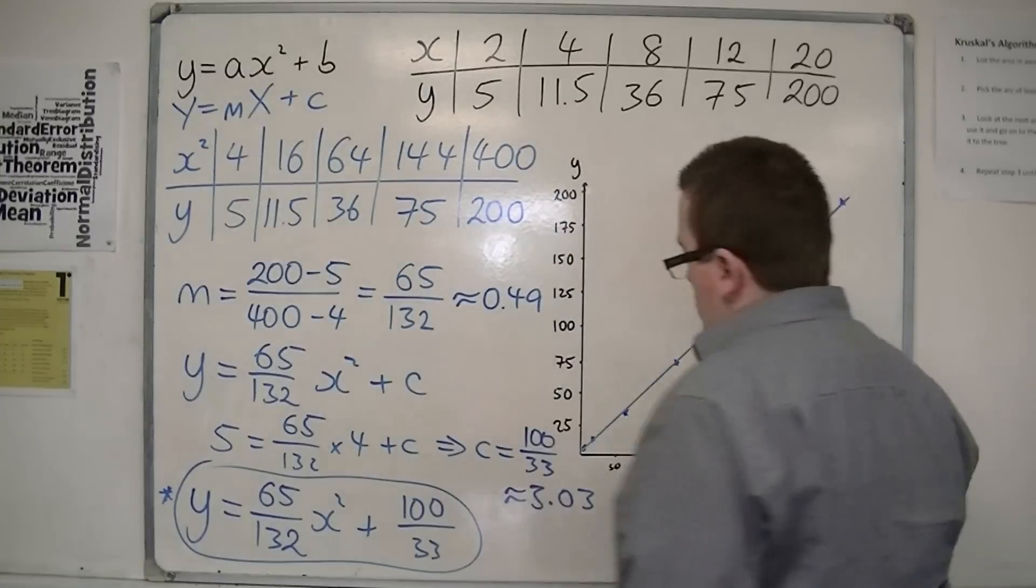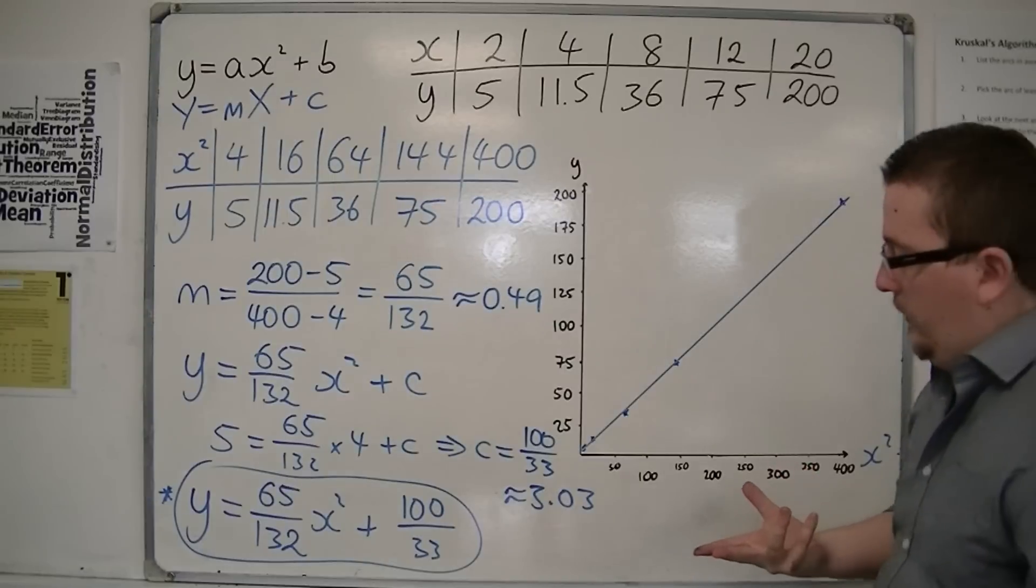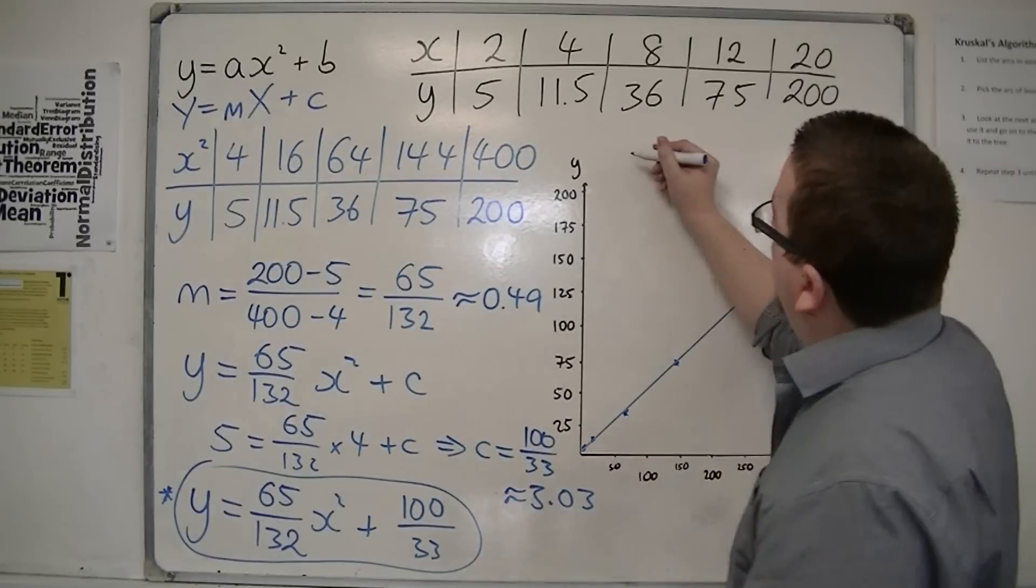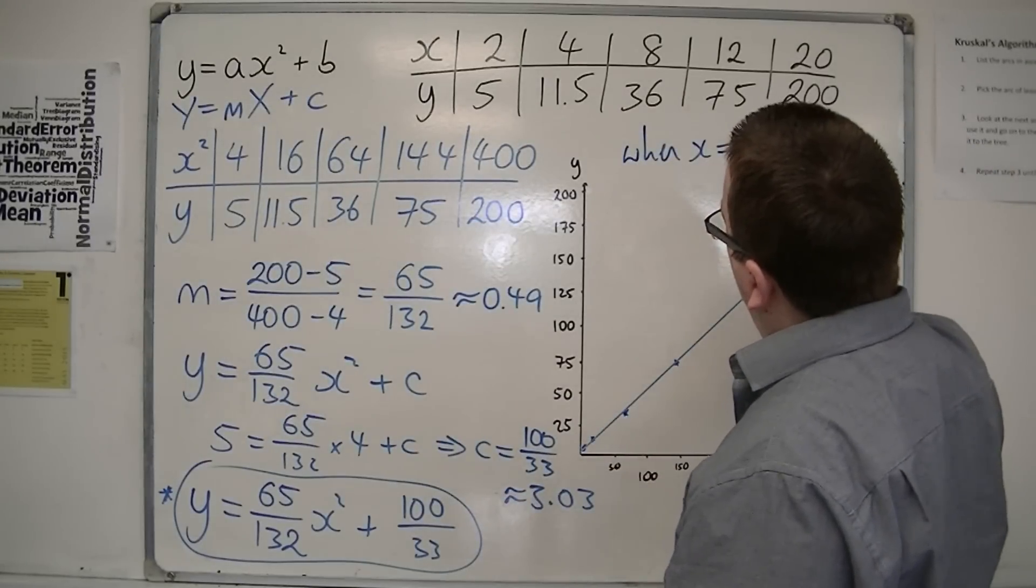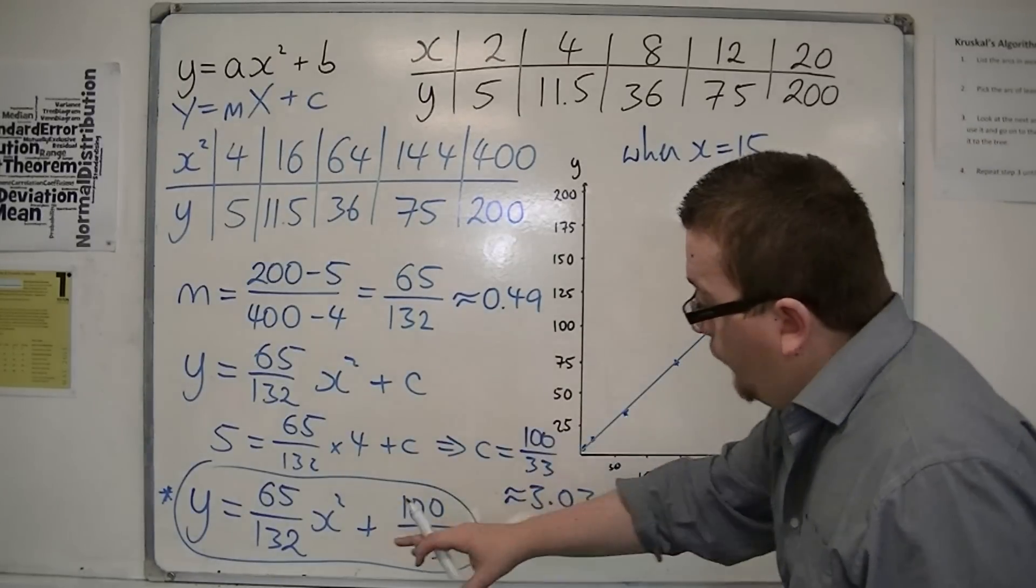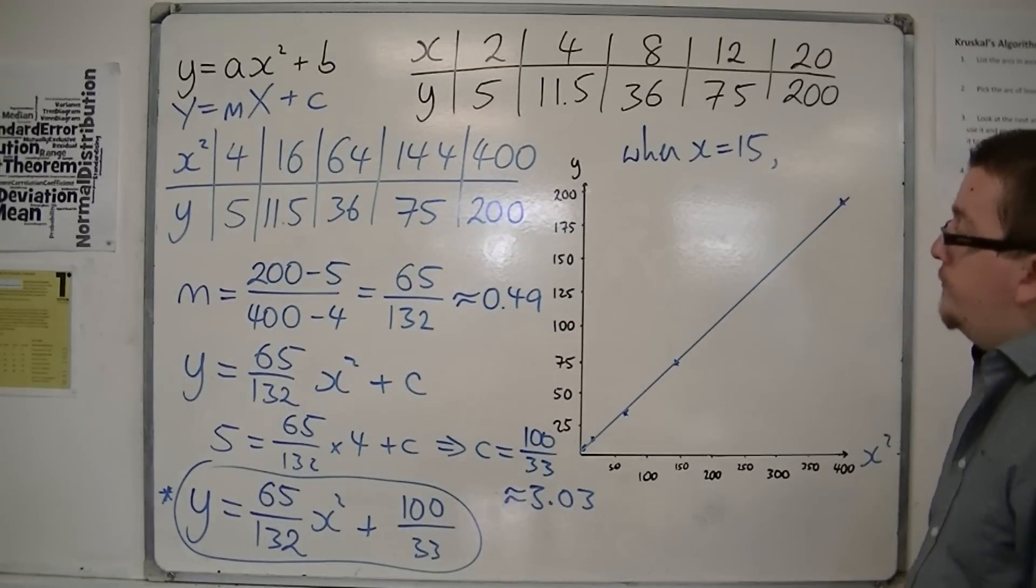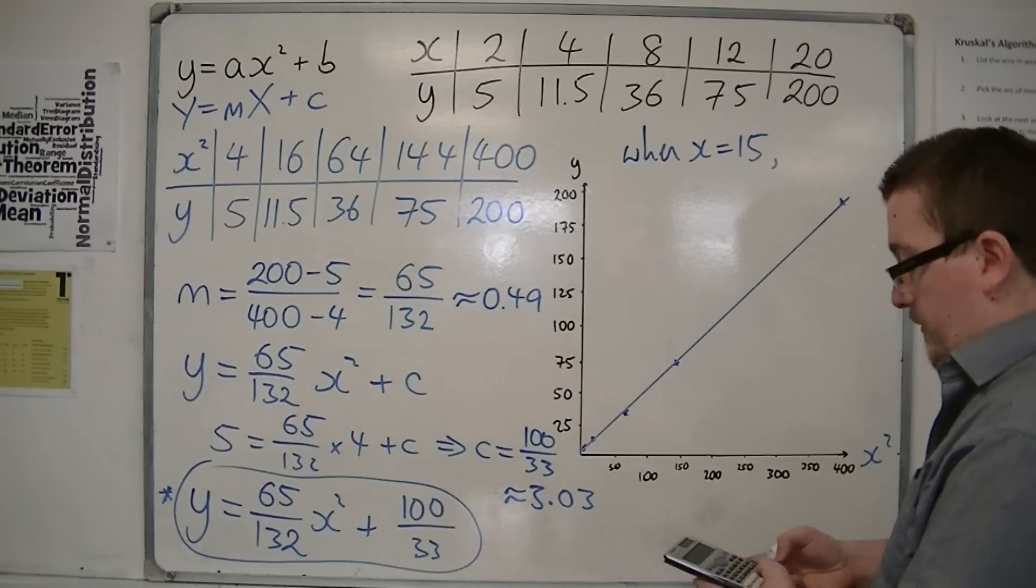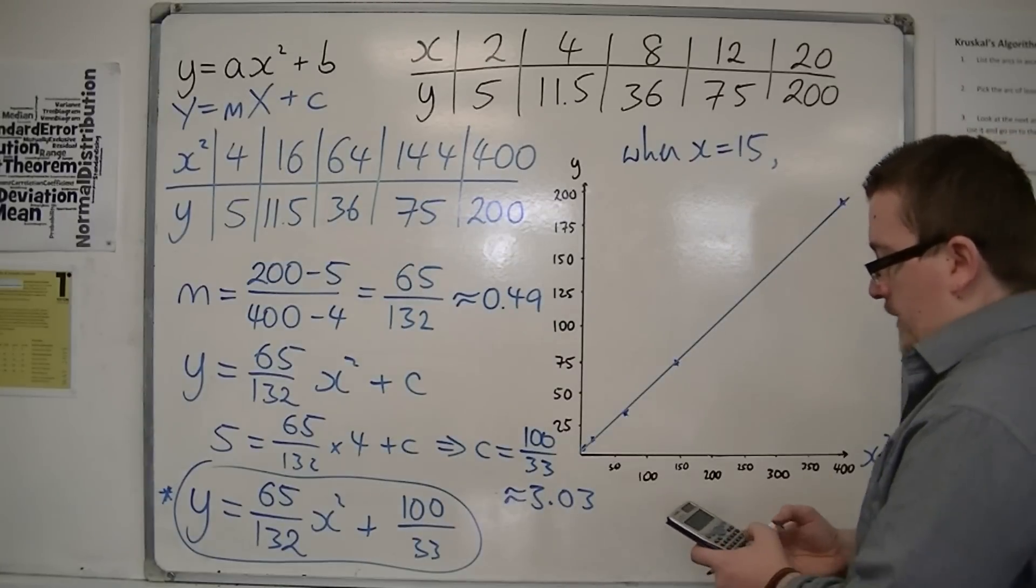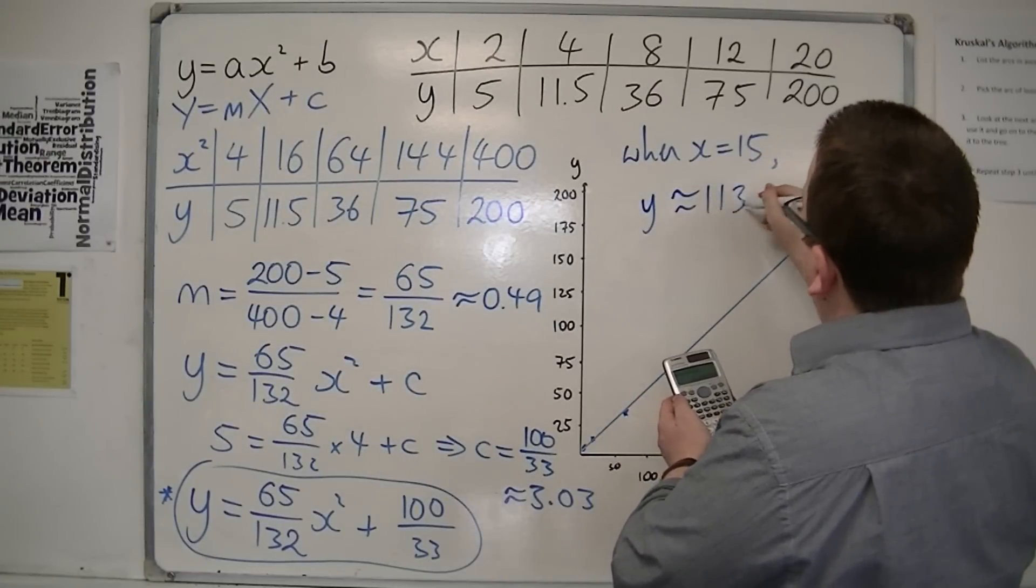So if I then wanted to say, what value would I get when x is, let's say, 15? Then I can use this equation now to generate a value of y that I would expect. And because it's come out in a straight line, I would assume that this is going to be correct. So when x is 15, I get 65 over 132, times by 15 squared, and then add 100 over 33. And what I get is that y must be approximately 113.8.